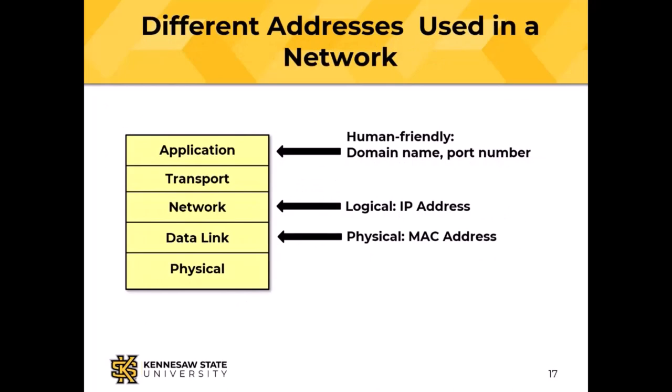At the application layer, we use a human-friendly address like www.kennesaw.edu, and we might use a port number. Sockets exist entirely in software and are not anything you could physically plug something into. At the network layer, we use a logical address — an IP address or IPv6 address. At the physical layer, we use that medium access control address, which we talked about when we discussed Ethernet.